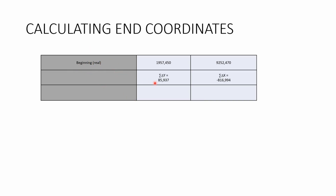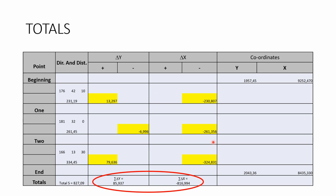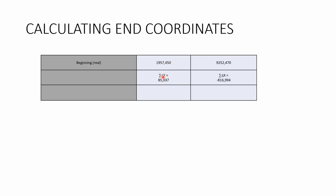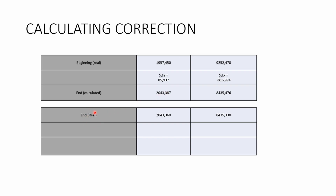We have been given the coordinates for 'beginning', and we've calculated our total delta Y and delta X. Theoretically, if we add all our delta Y values to the Y coordinate of beginning it should give the Y coordinate of end — same for X. We calculate the coordinates for our end point this way, but when we compare them to the real given coordinates for end, they are similar but not exactly the same. So we need to make an adjustment.